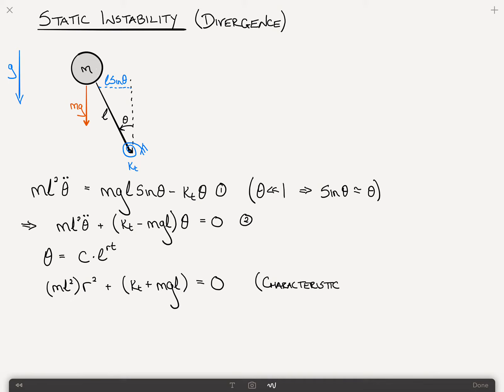And I'm speeding through this because we've seen this in a previous video. The link appears above if you'd like to reference that. And then we have the roots r one and two is equal to plus or minus the square root of m g l minus k sub t, divided by m l squared.